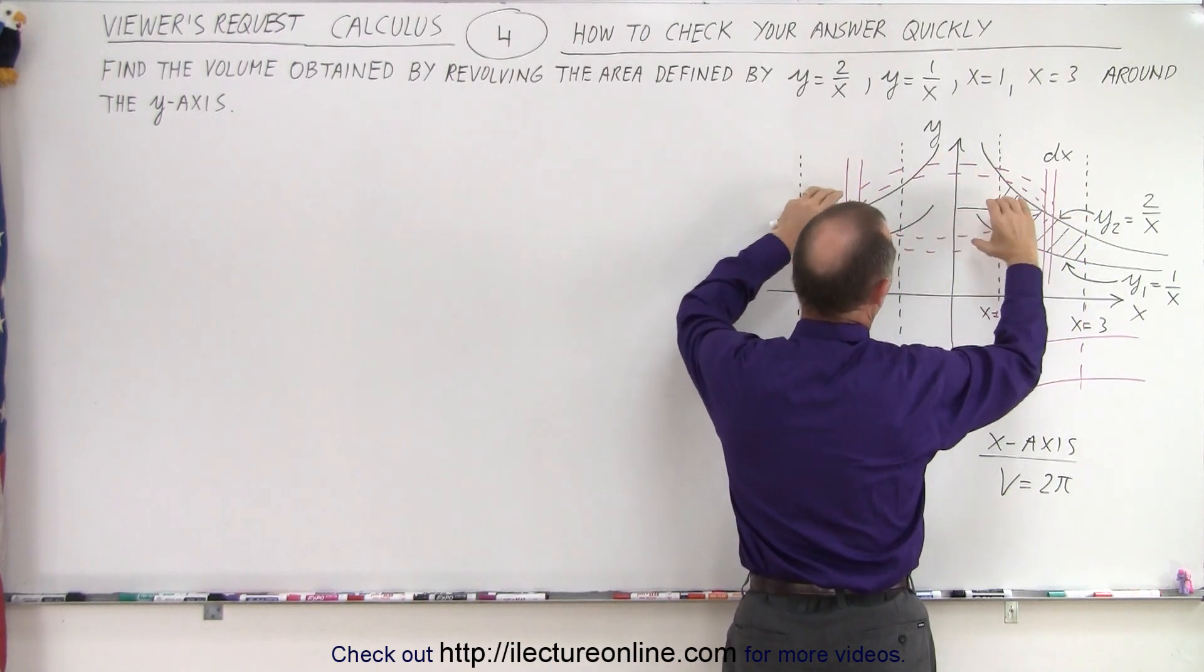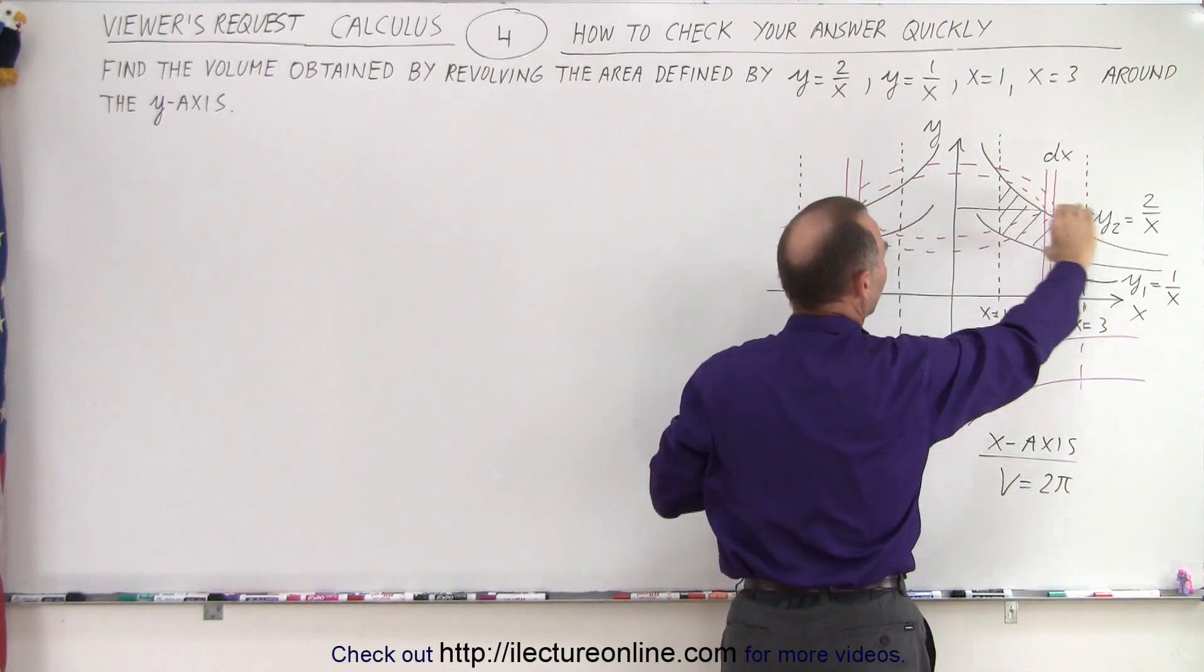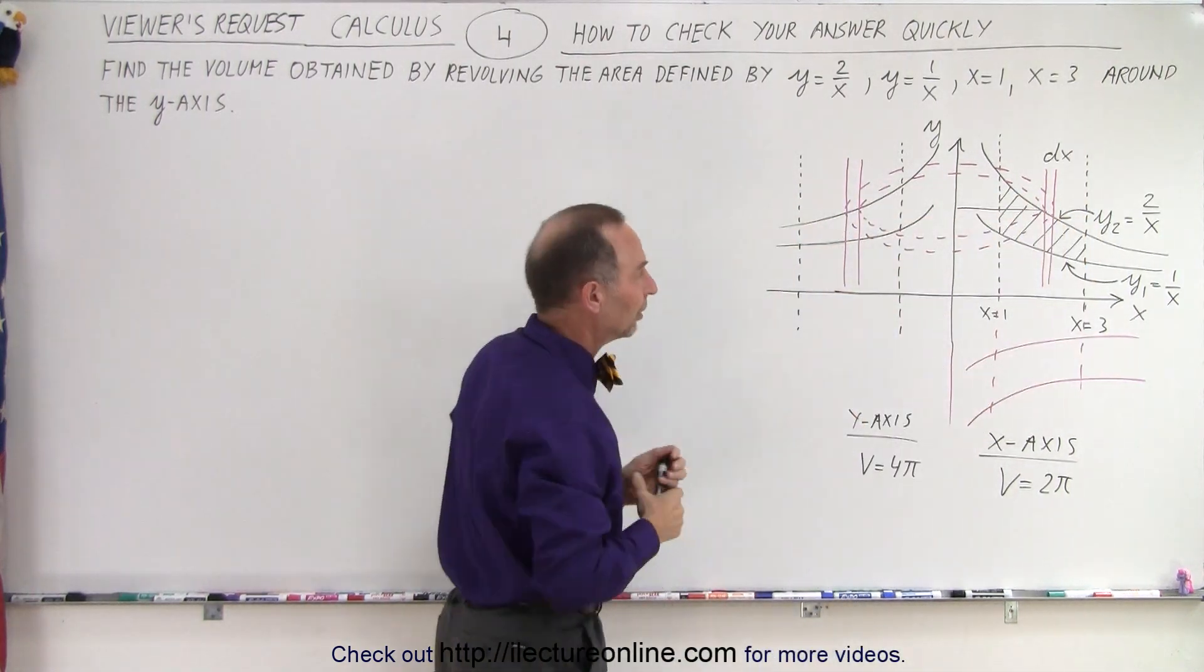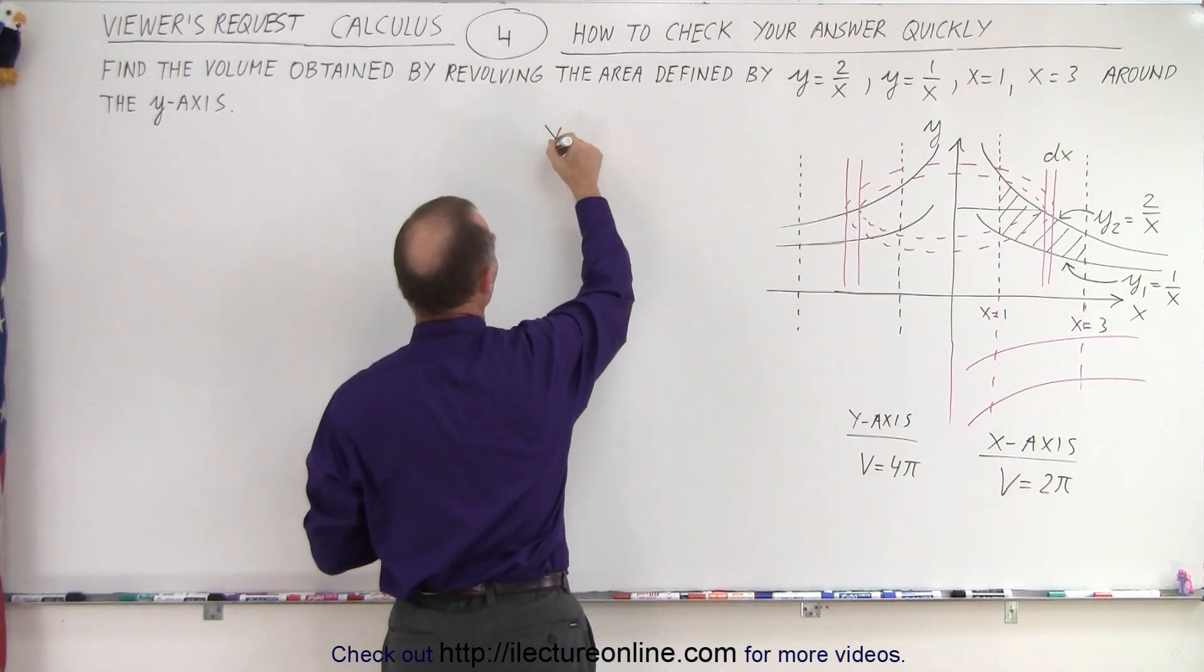You can flatten out the tire, get kind of the average height, and then you end up with a cylinder or a hollow tire that you can easily find the volume of. So let's try that. First, we're going to do around the y-axis.